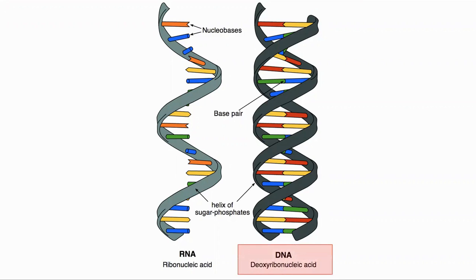DNA famously forms a double helix where the two strands are locked together by matching base pairs. There are four different types of bases which are always paired in the same way. Sequences of base pairs in the DNA act as a blueprint for the amino acids which will make up the protein.